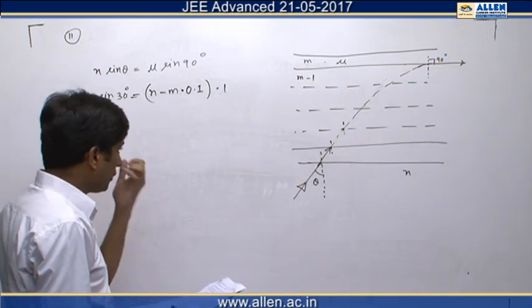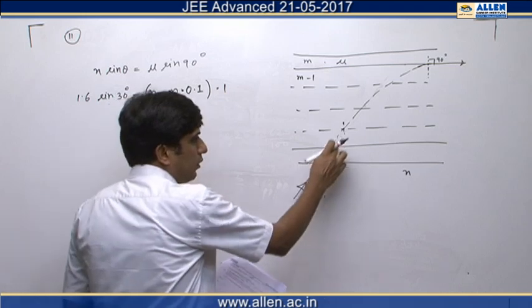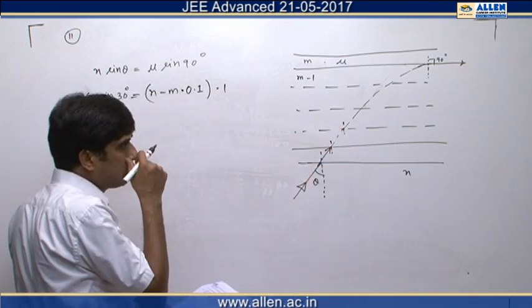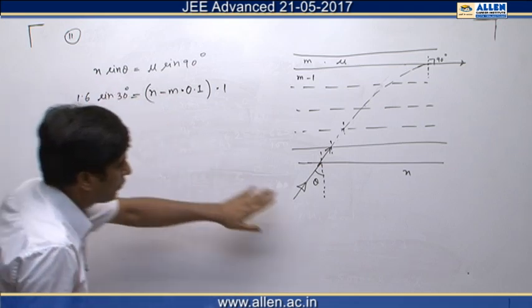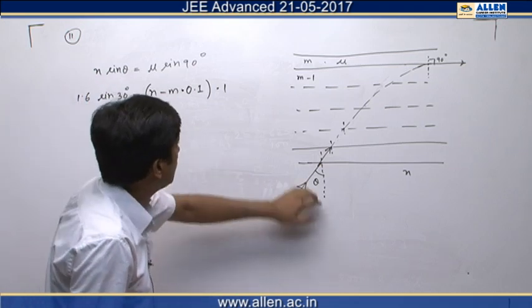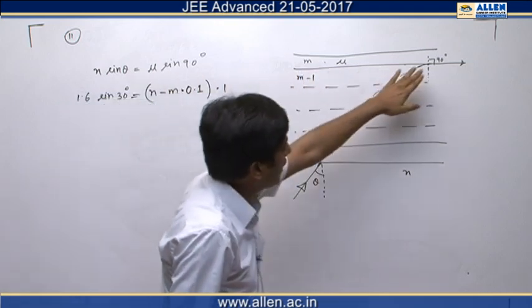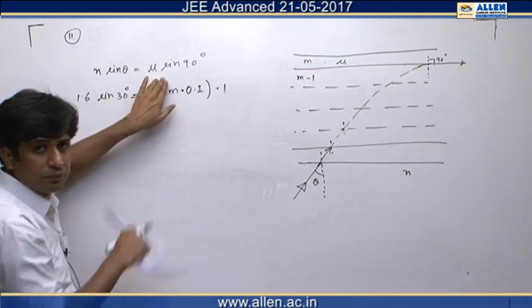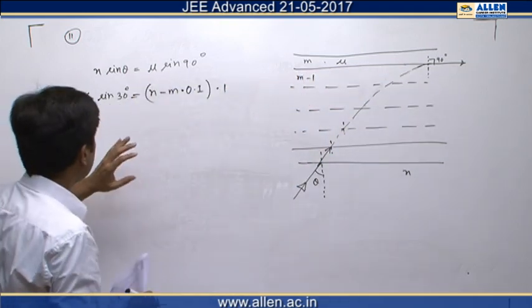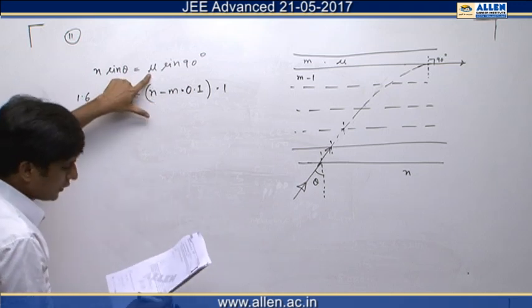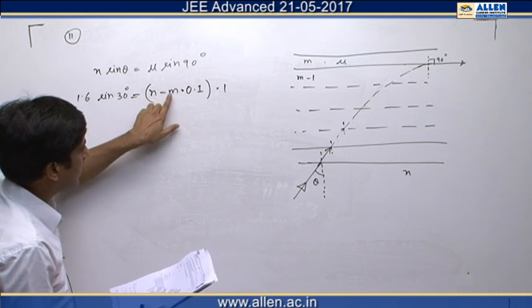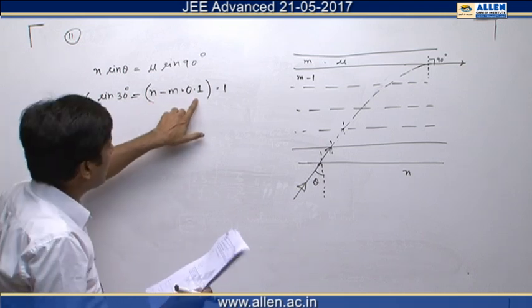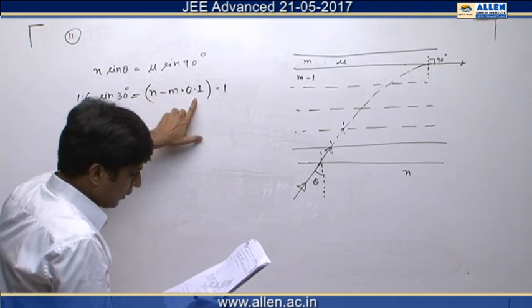Now since normals are parallel to each other, we can use Snell's law as N sin theta of this medium equals mu sin 90 of that medium. From this equation and the value given in the question, mu is N minus M delta N, where delta N is 0.1 according to the question.